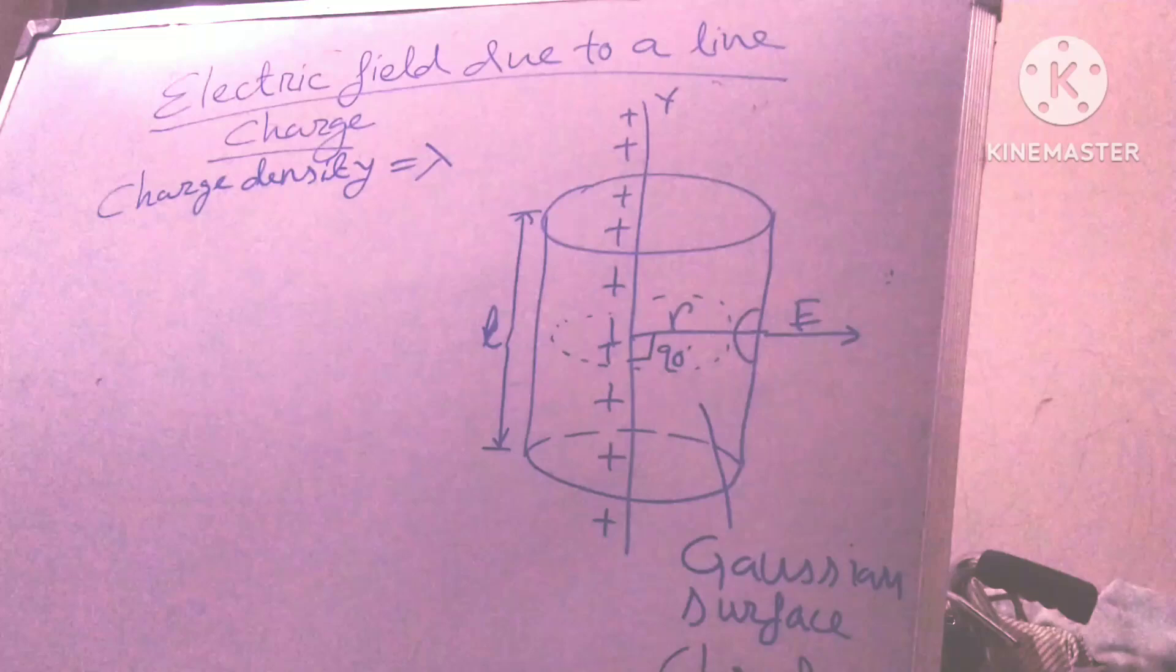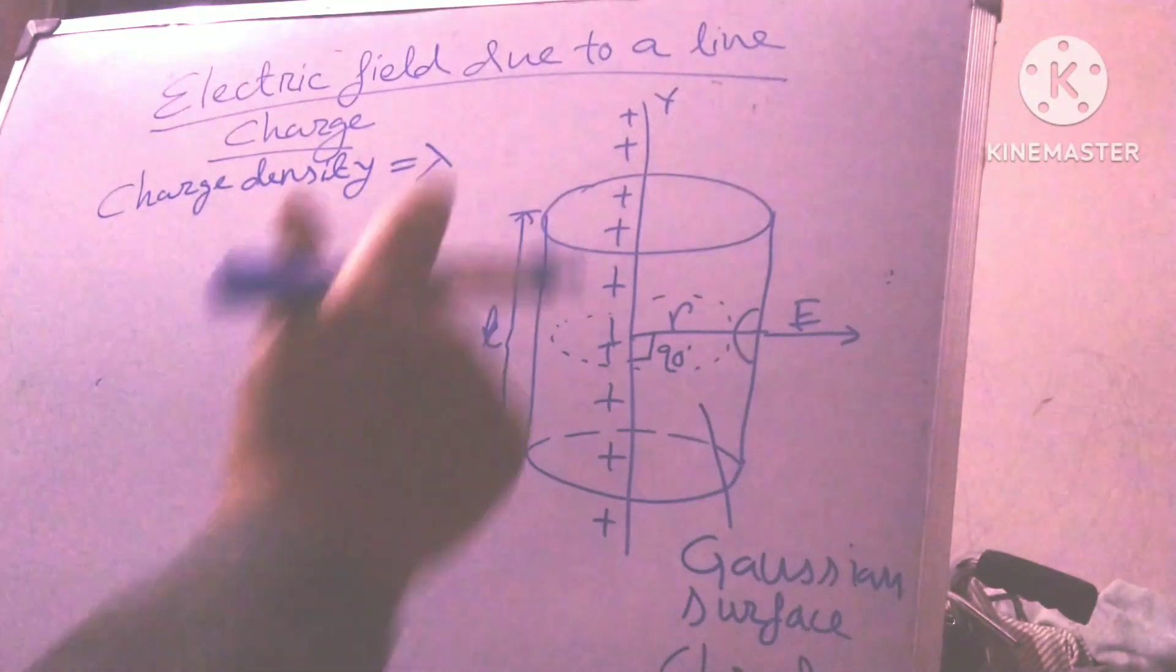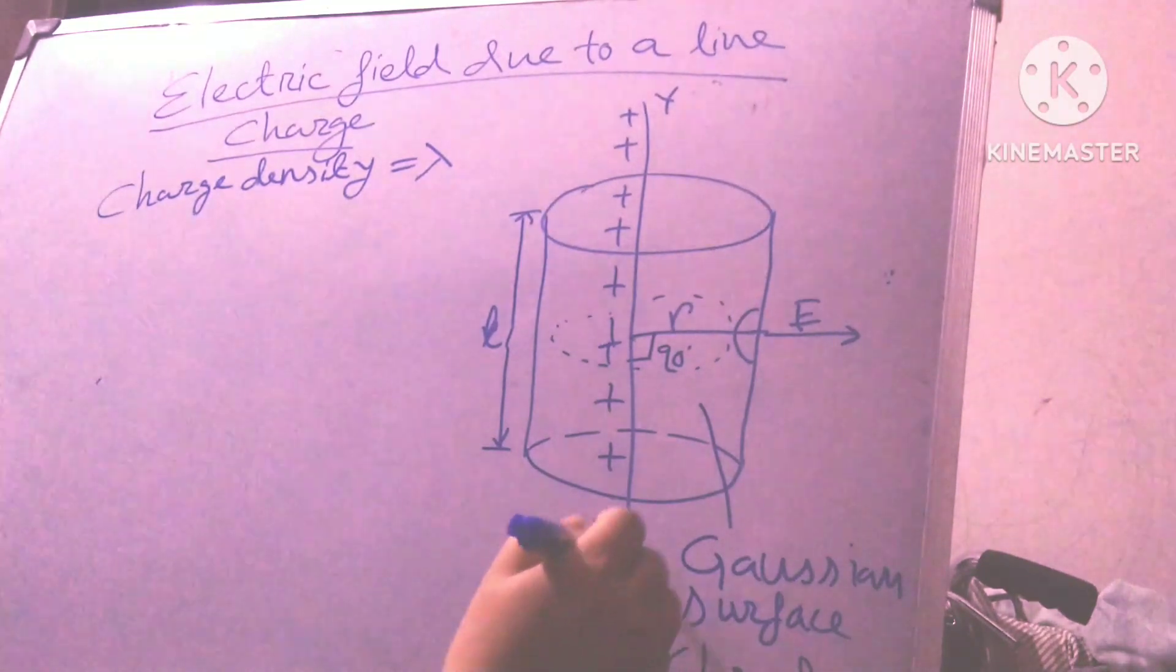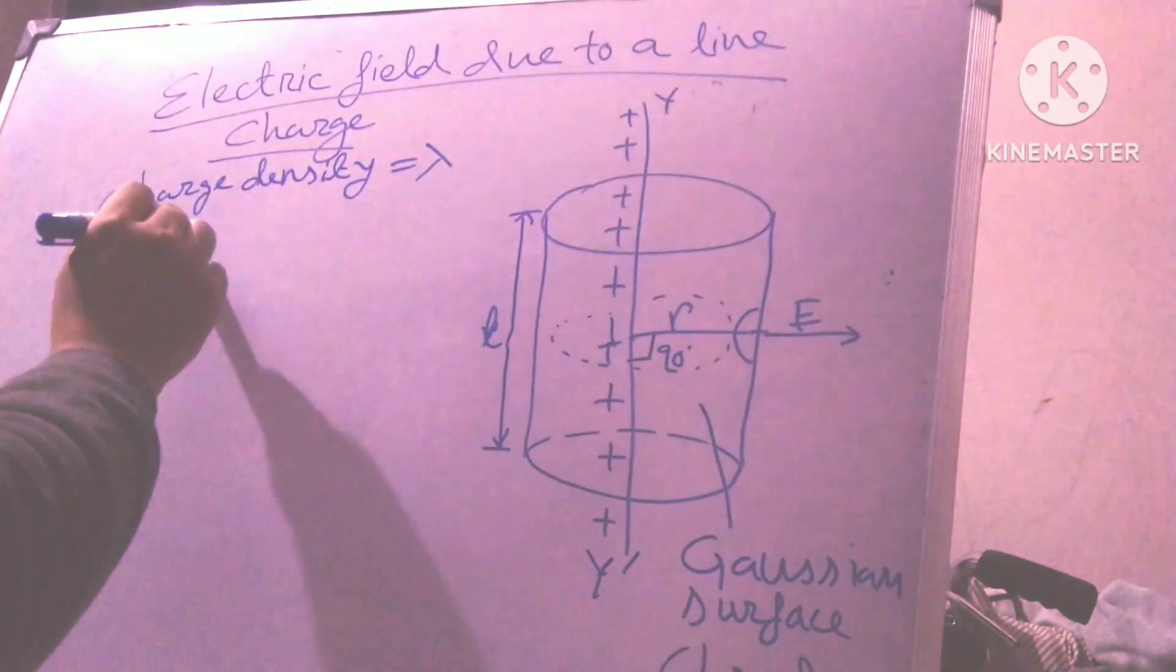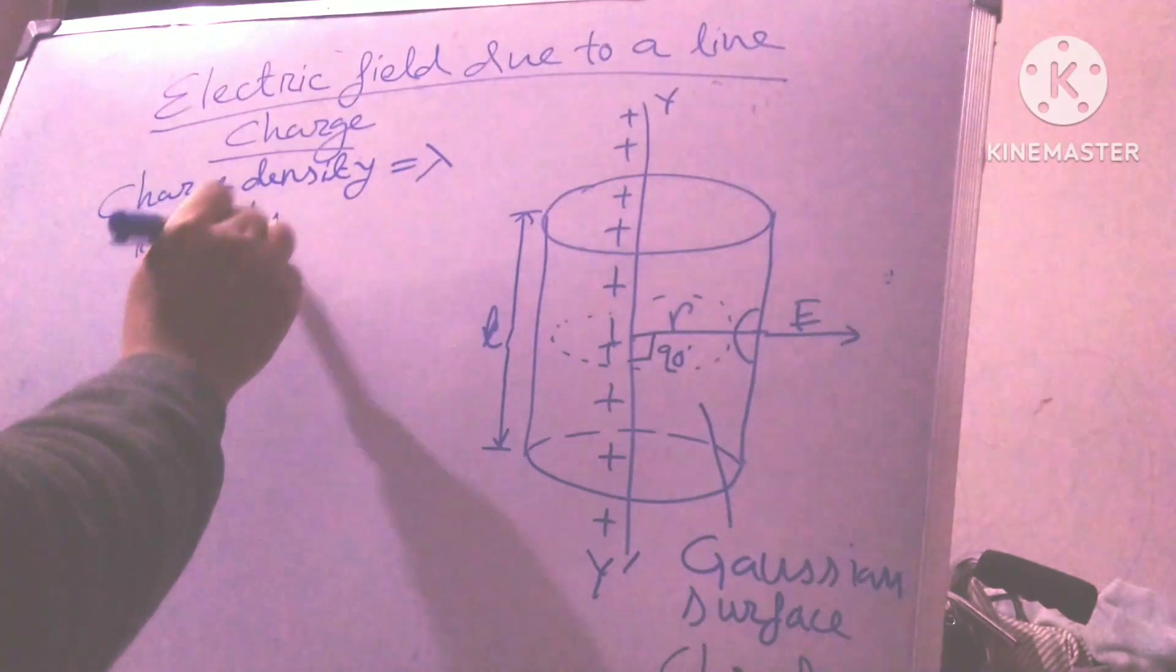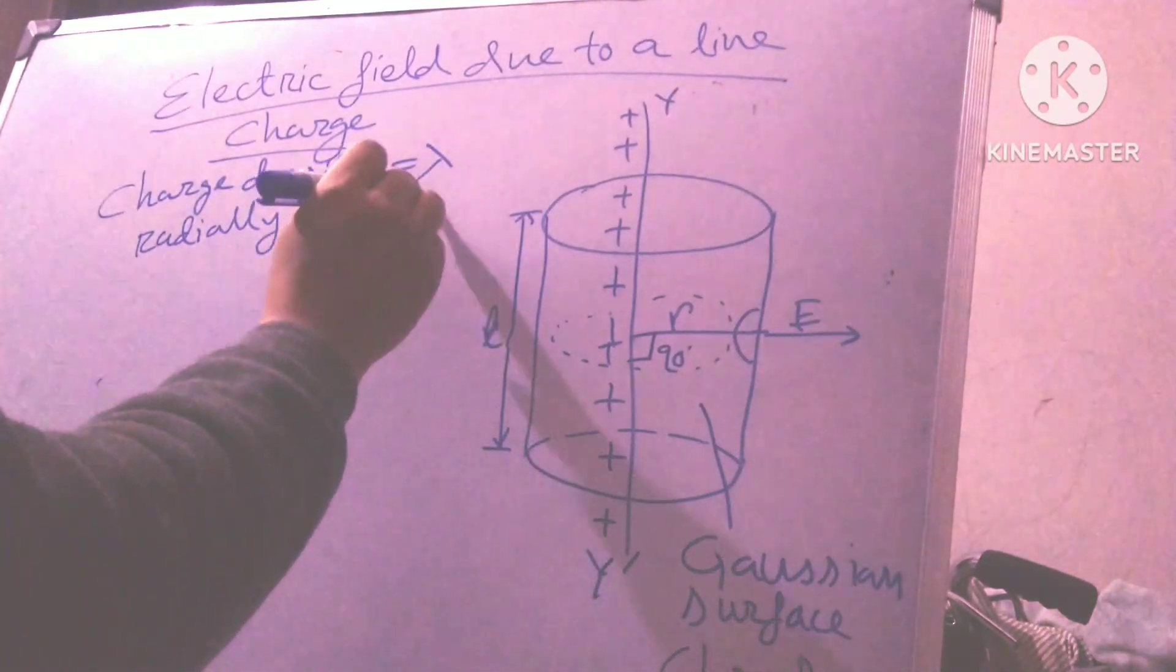And lies along y, y dash. This is the y and y dash. By symmetry, it follows that electric field due to line charge at a distance r in any plane at right angles to the line charge is of the same magnitude and directed radially outwards. This point is important. Radially outwards.